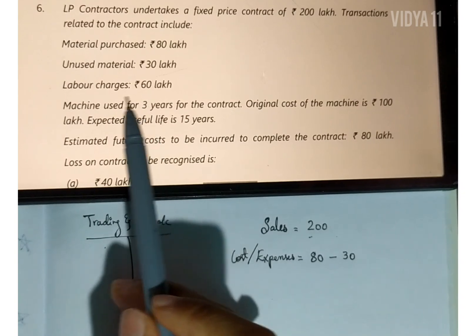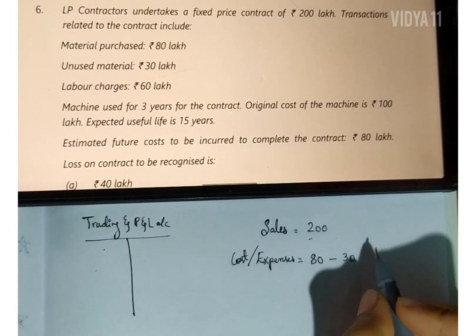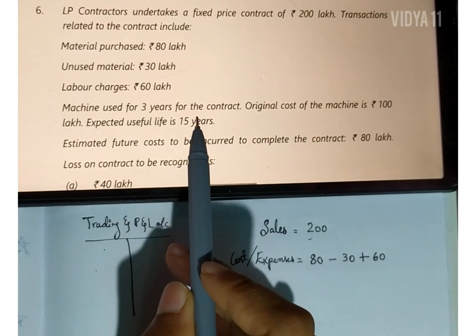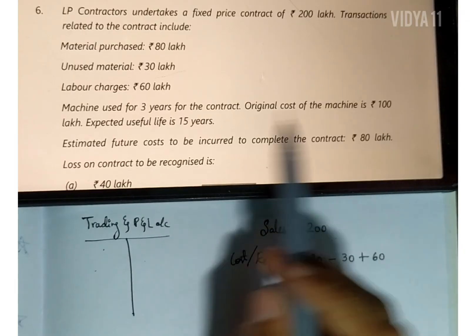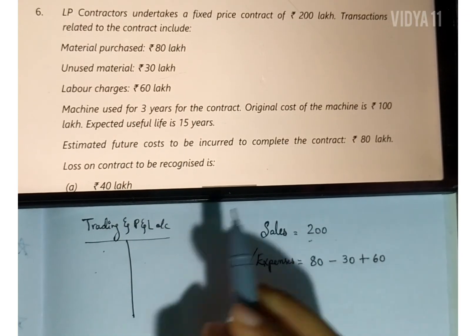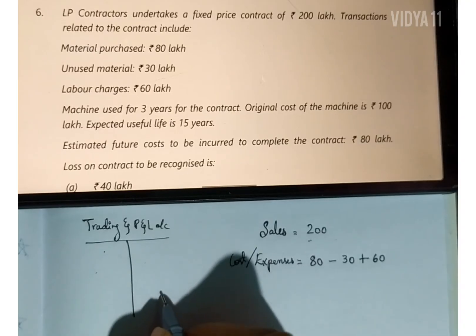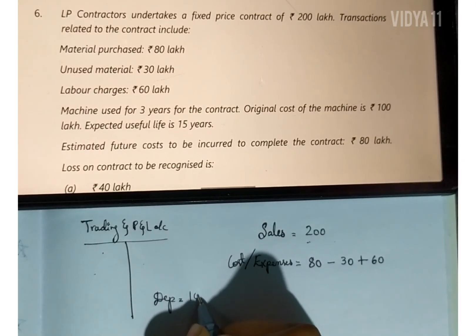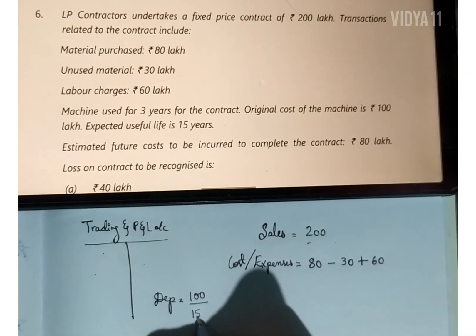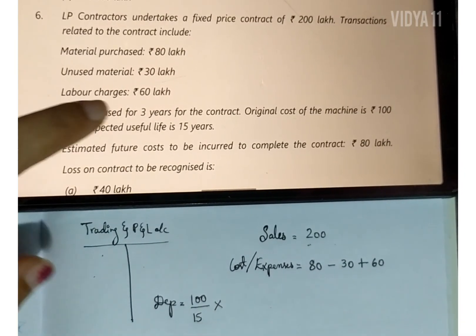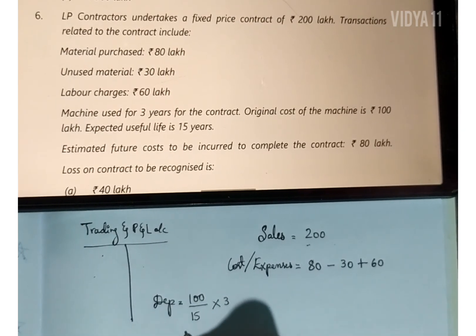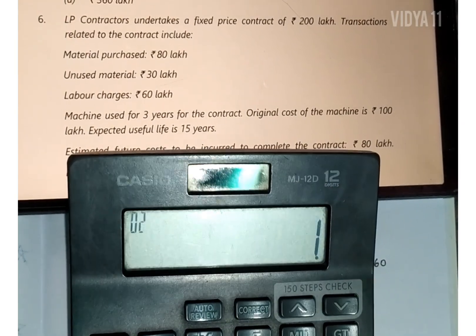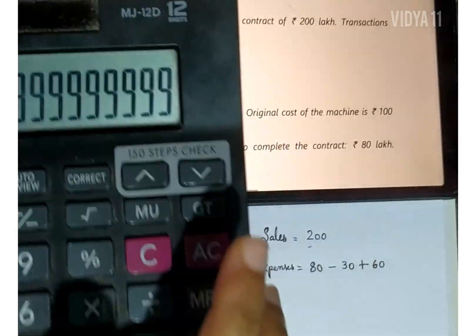Labor charges are again an expense on the debit side: 60 lakh. The machine was used for three years; original cost is 100 lakh and expected useful life is 15 years. Depreciation expense = 100 lakh ÷ 15 years × 3 years = 20 lakh.